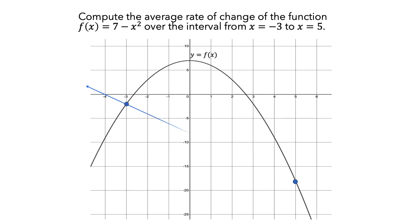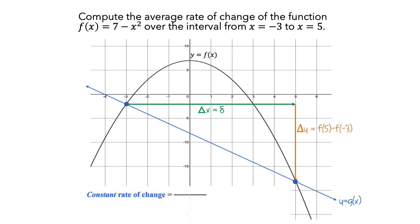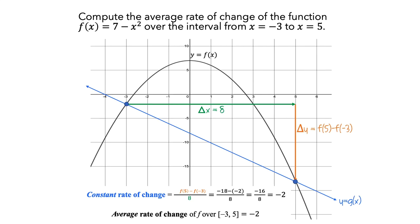We are interested in computing the average rate of change of f from x equals negative 3 to x equals 5. So we'll imagine a linear function g that, for the interval from x equals negative 3 to x equals 5, has the same change in y values as the function f does. The change in x values is 8, and the change in y values is g of 5 minus g of negative 3. Since the values of f and g are the same at the endpoints, we can replace g of 5 and g of negative 3 with corresponding values from f. The constant rate of change of this linear function is the ratio of its change in y values to the change in x values, which for this particular function f is equal to negative 2. So the average rate of change of f over the interval is also negative 2.